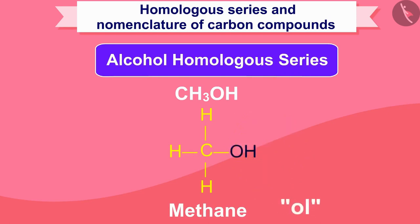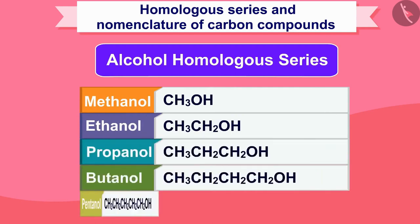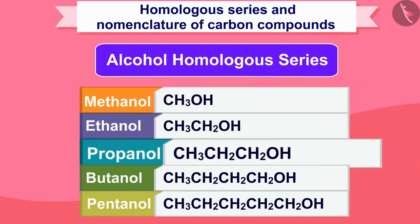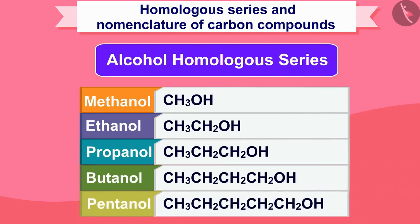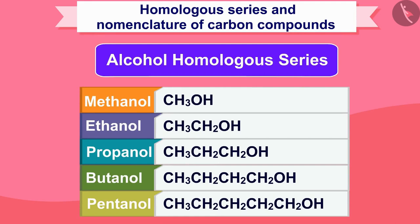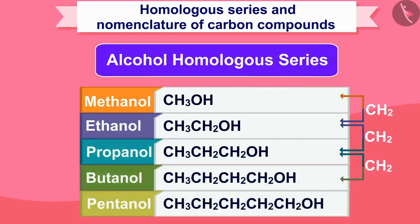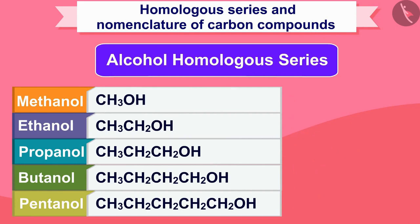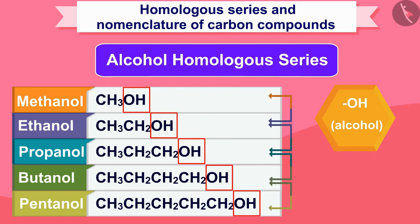If an OH alcohol group is added instead of a hydrogen of methane hydrocarbon, the name 'ol' will be added to form methanol. Similarly, the entire homologous series is composed: methanol, ethanol, propanol, butanol, pentanol, etc. CH2 has to be added to move from one unit to the next, changing 14 mass. And because they all have the same functional group, OH, they all have similar chemical properties.